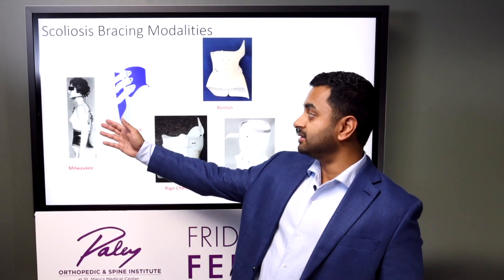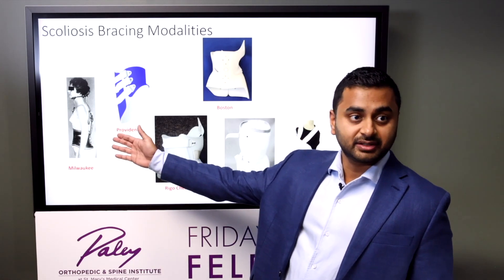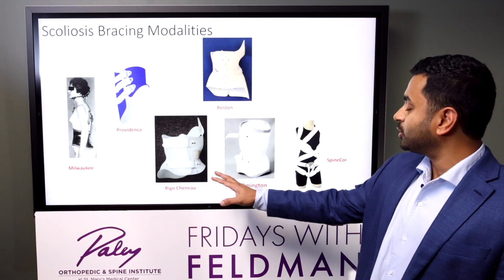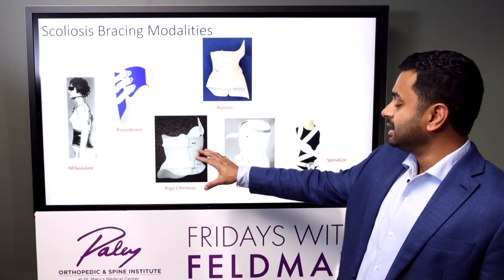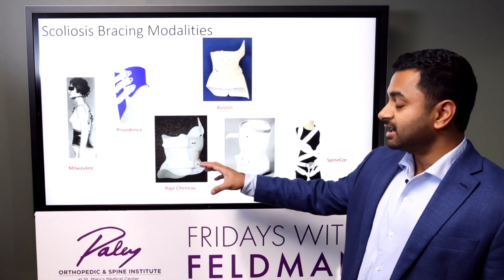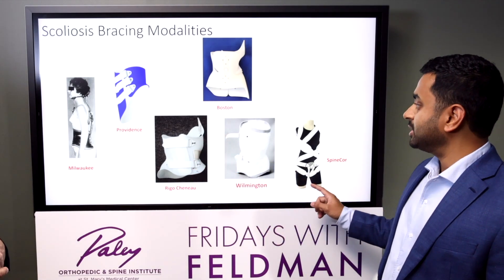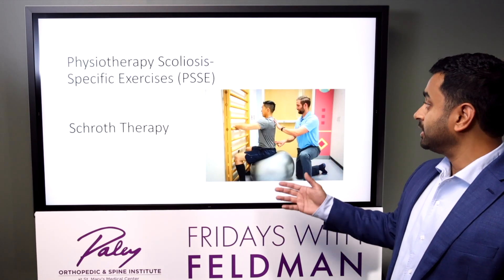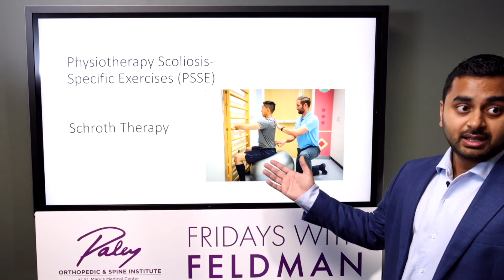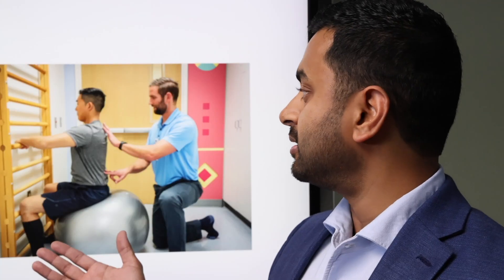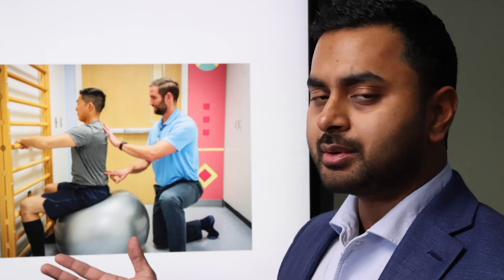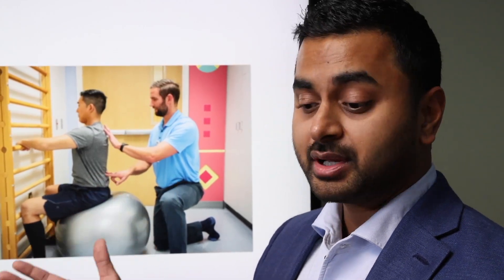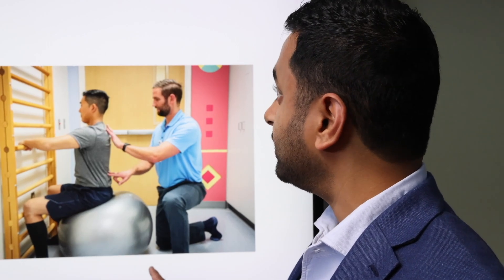Back in the day you might have seen on movies these big, crazy braces, but now we use more modern techniques with braces that have 3D printed technology in them and really help control the scoliosis. We also do a lot of specific therapy called Schroth therapy, where it's super important for the patients to get better balance, and sometimes this can even help with the curve itself.